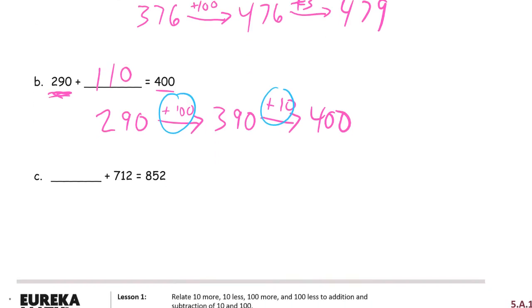And letter C. This is almost the same kind of problem. We have to figure out the first addend. So we're going to add our way up from 712 to 852. We have to figure out what to add to 712. Even though we don't know what comes first, it doesn't matter because this is addition. And remember, because of the commutative property, it doesn't matter which one you start with. So we'll start with 712. And we can add 100 to that. 812.